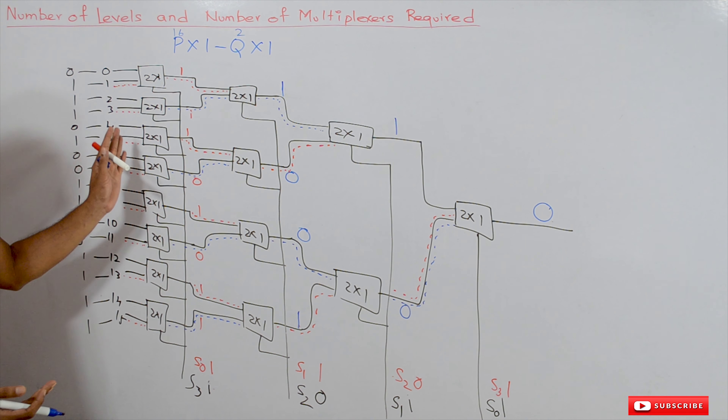For example, if you are asked to construct a 1024 by 1 multiplexer using 4 by 1 multiplexers, do we need to draw the diagram and count? No. To get the number of levels: k = log(1024) base 4 = log(2^10) base 4 = 10/2 = 5. So 5 levels are required to construct this multiplexer.